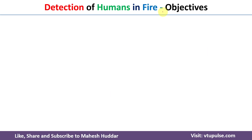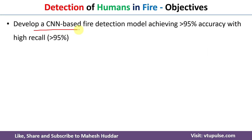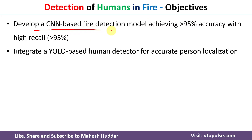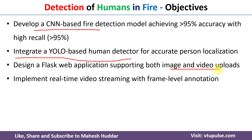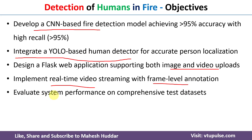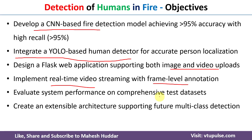The objectives of this project are: develop a CNN-based fire detection model; integrate a YOLO-based human detector for accurate person localization; design a Flask web application supporting both image and video uploads; implement real-time video streaming with frame-level annotation; and evaluate the system performance on a comprehensive test dataset.